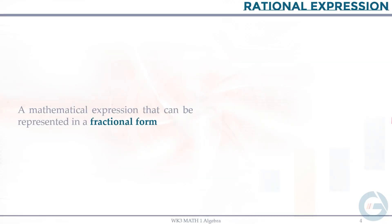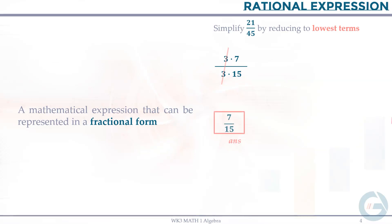First, the rational expression — a mathematical expression that can be represented in a fractional form. For example, 21 over 45. We're asked to simplify this by reducing to lowest terms. The process is to factor out the numerator and denominator to find a common factor we can cancel. 21 can be written as 3 times 7, and 45 as 3 times 15. The common factor is 3, so we cancel it, giving us the simplified form: 7 over 15.